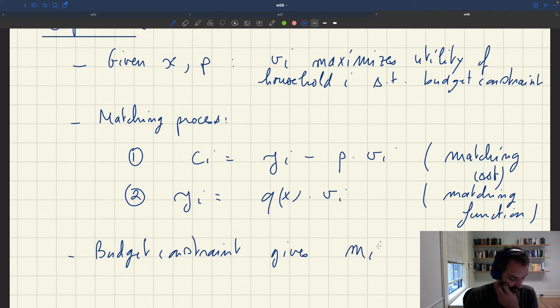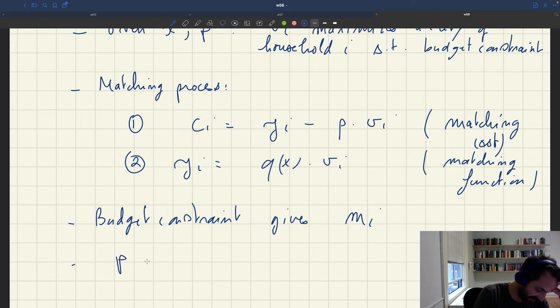So the wealth of the household i at the end of the day, we know that it's given by the budget constraint. We have mi, yi, ci, then of course the price p is given by a price norm. So that's settled.